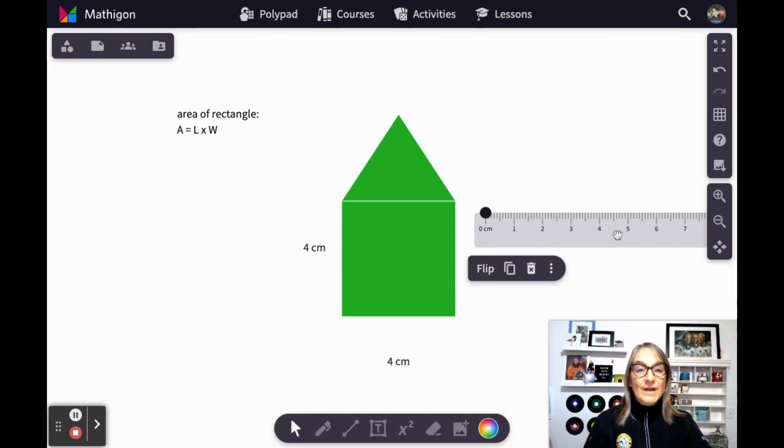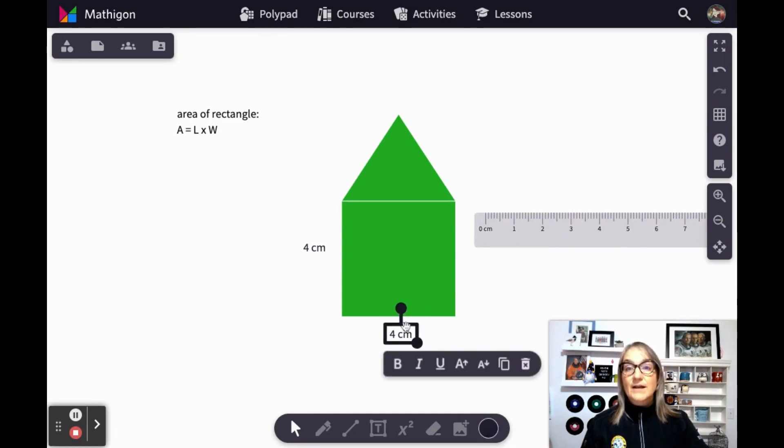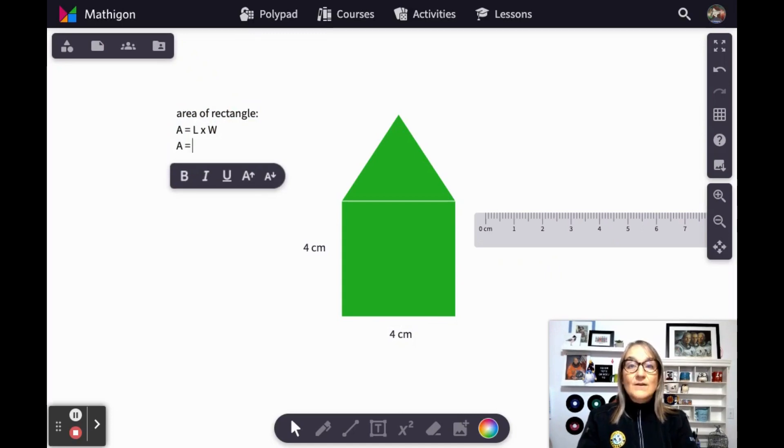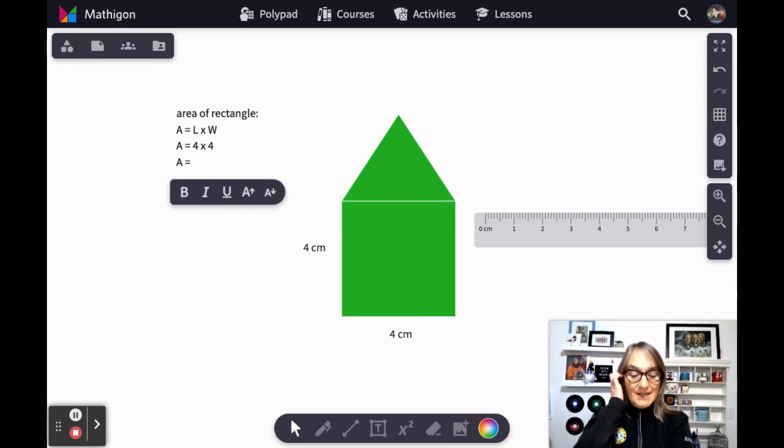Now we have to multiply four by four to get the area of our rectangle using our formula here. So if area equals length times width, the area of this rectangle will be four times four, which gives us a total area for this square of 16 square centimeters.